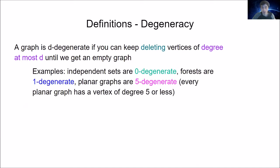Some examples: independent sets are 0-degenerate — you keep deleting vertices of degree zero. Forests are 1-degenerate — you keep deleting a leaf. Planar graphs are 5-degenerate: every planar graph has a vertex of degree five or less by a well-known theorem, so you keep deleting that vertex until you get an empty set.